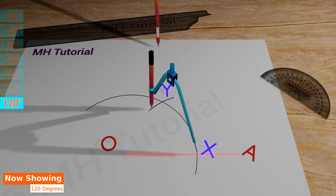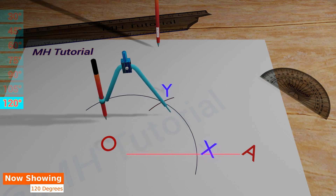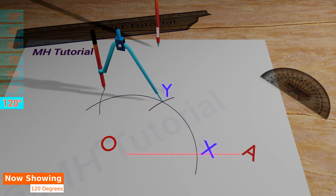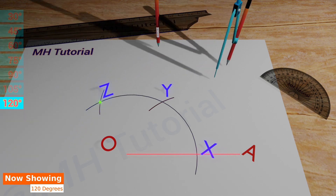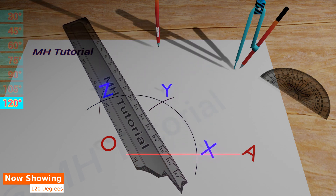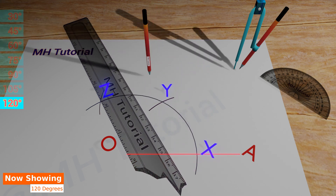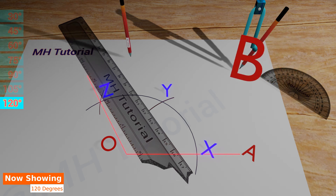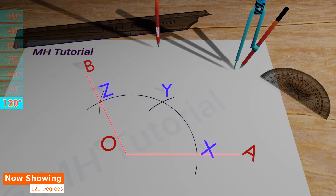After that, put the tip of the compass at point Y and draw another circle arc of the same radius to get an intersection against the first circle arc. This point of intersection is named Z. Now align the ruler about point O and point Z and draw a line segment between them. This line segment is named OB. Thus the angle AOB is a 120 degrees angle.